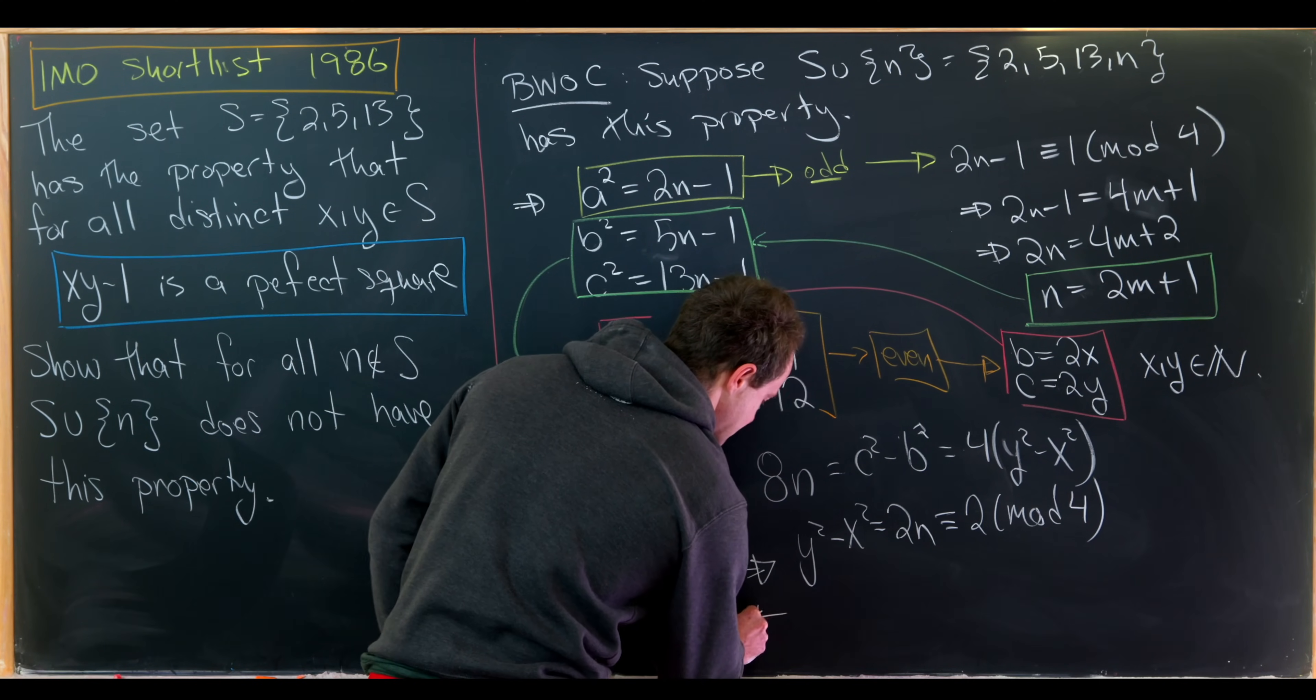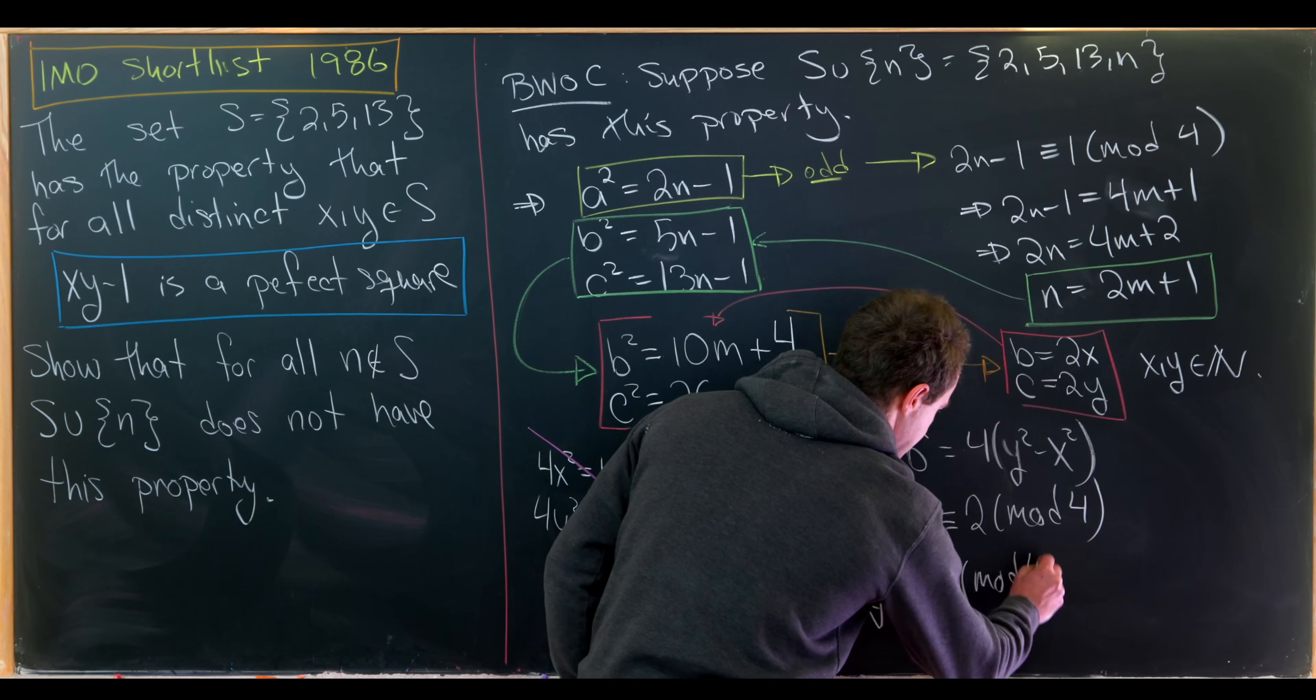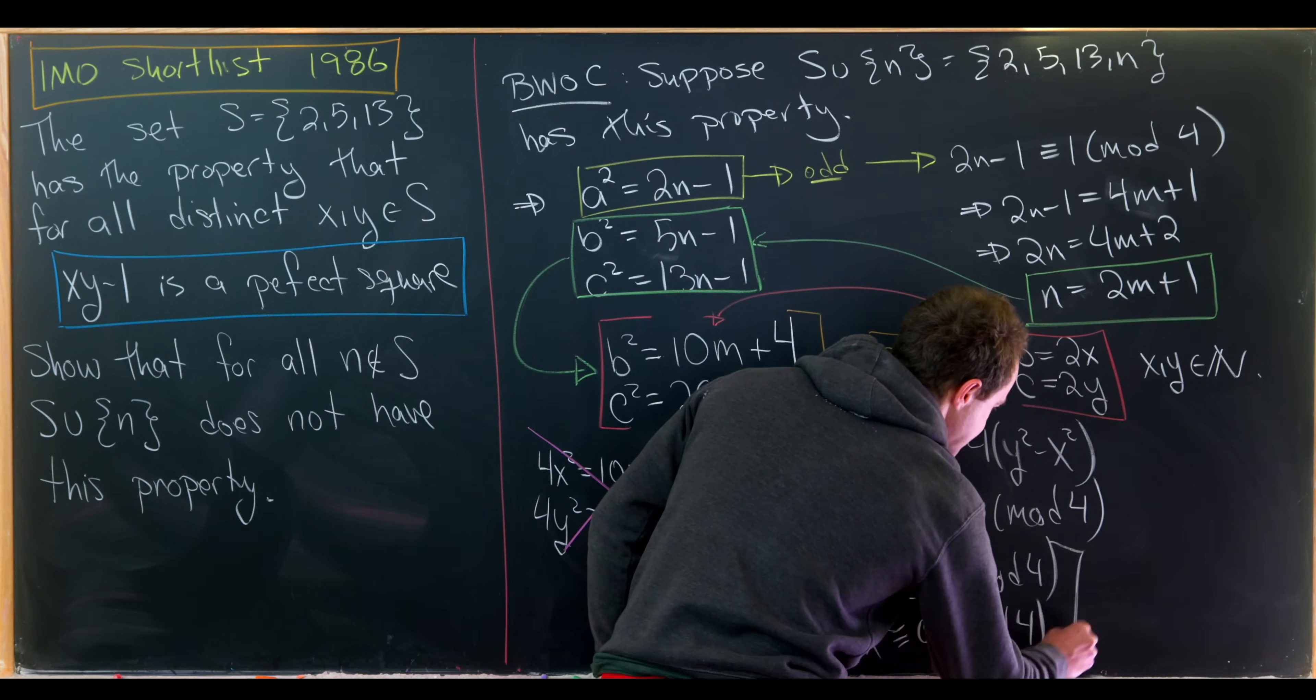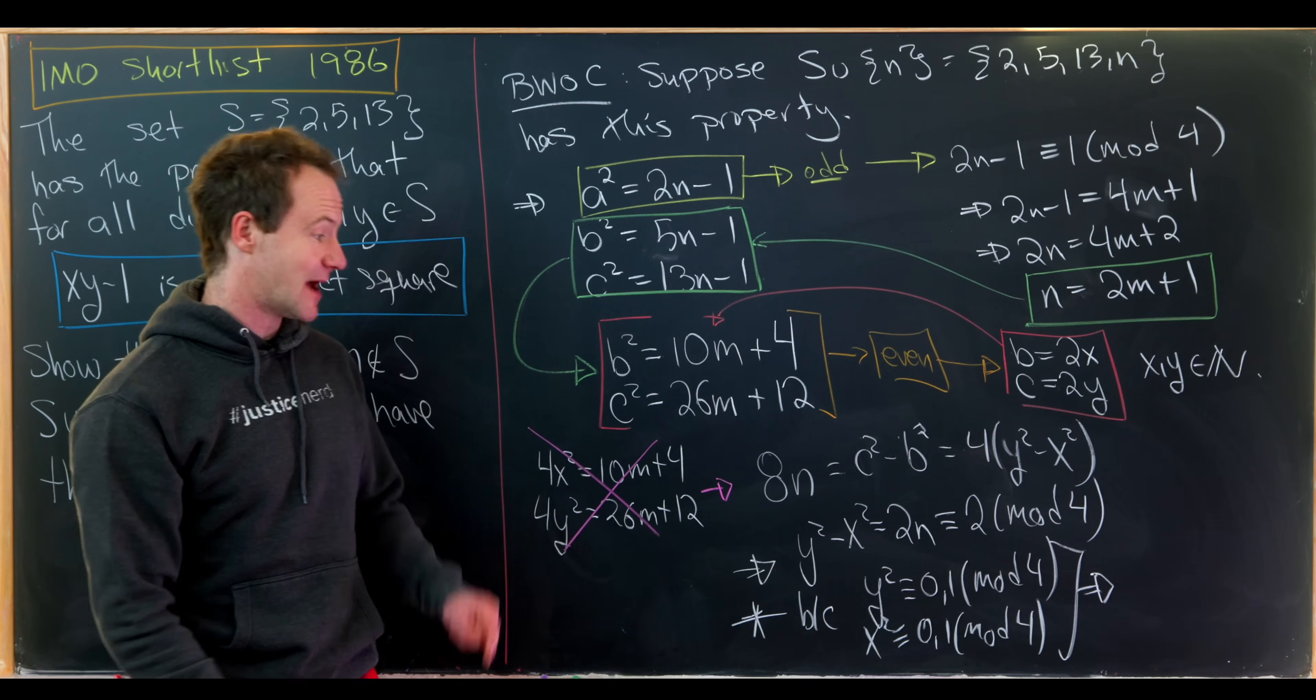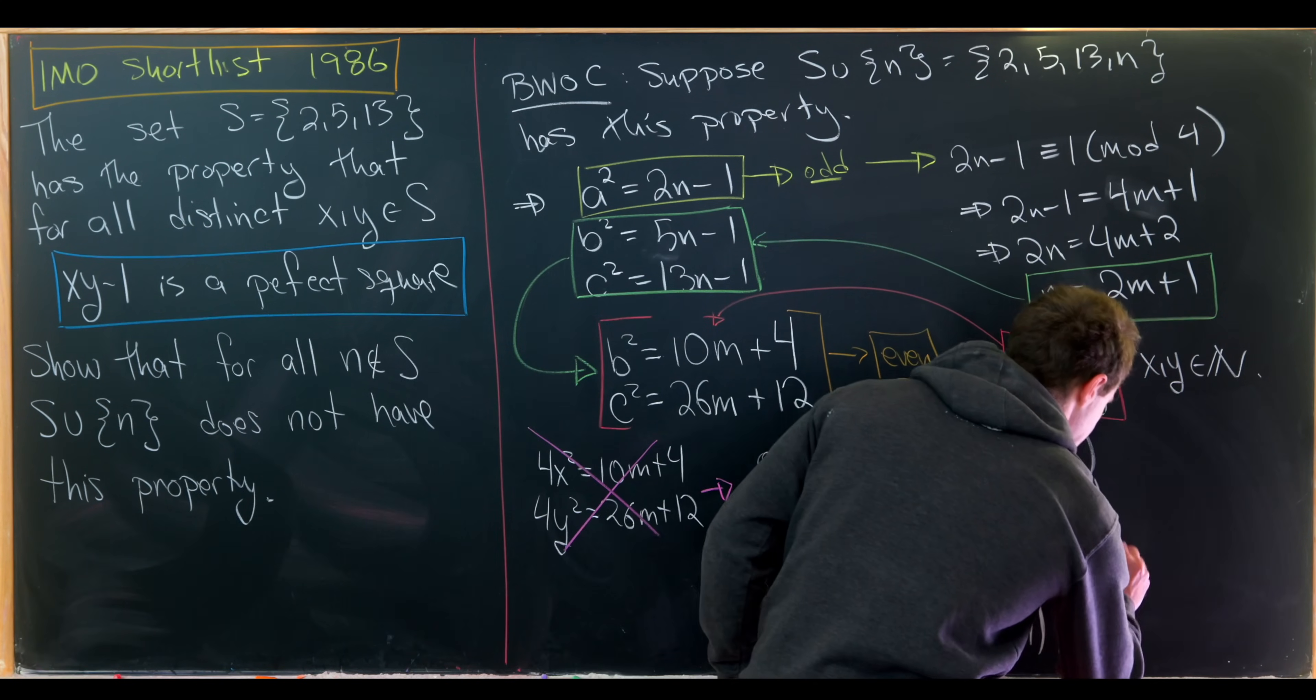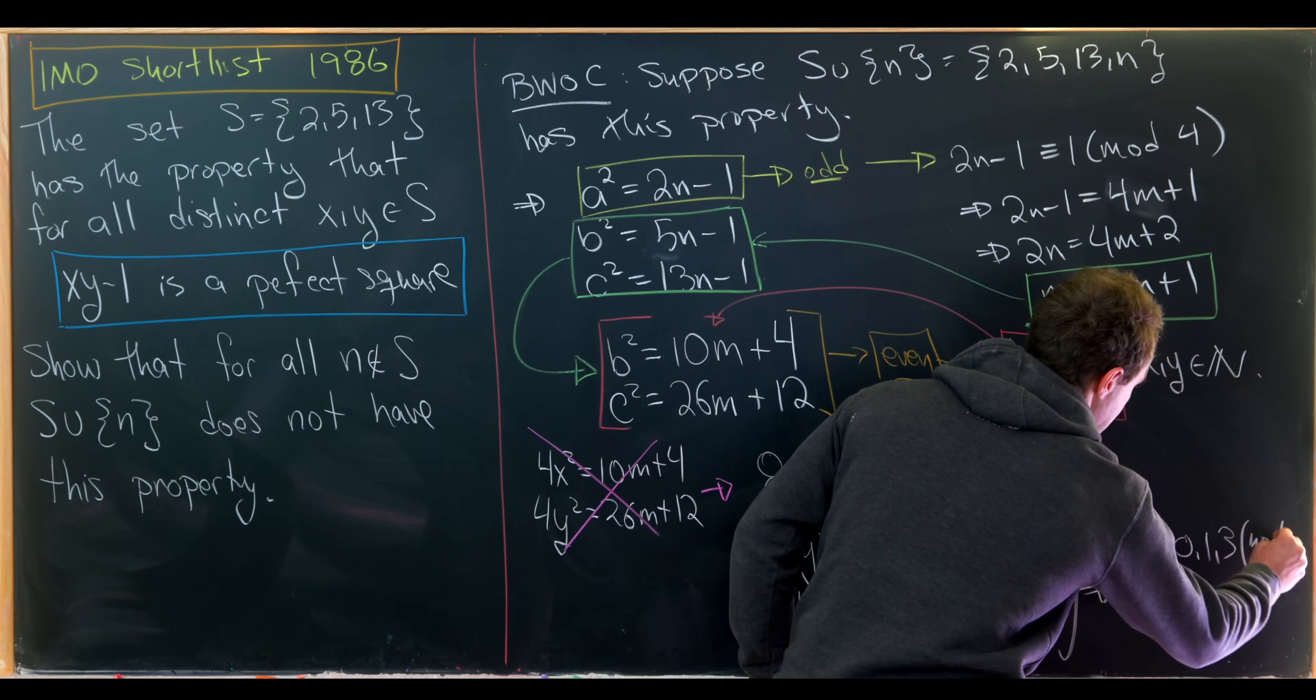So I'll put this is a contradiction because y squared is either congruent to 0 or 1 mod 4, and x squared is also only congruent to 0 or 1 mod 4. So when you take their difference, you can achieve anything mod 4 except for 2. Notice taking the difference here, we'll never end up with something that's 2 mod 4. So in fact, what we have is y squared minus x squared is either congruent to 0, 1, or 3 mod 4.